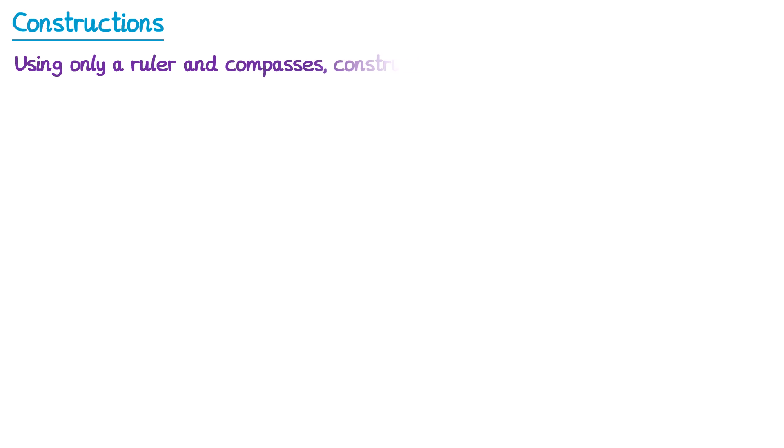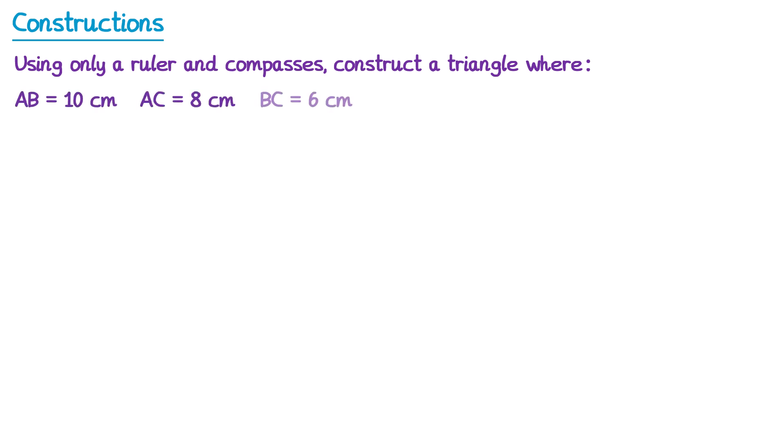Next we're going to look at how we construct triangles. You may be asked to use only a ruler and compasses to construct a triangle with some specific information. For example, AB is 10, AC is 8, and BC is 6. In this question we've been given information about the lengths of all of the sides. To start, I would find the side which is the longest and just draw that on with a ruler. So AB is 10 centimetres — that's the longest — so we take a ruler and draw a 10 centimetre line, and label it as AB.